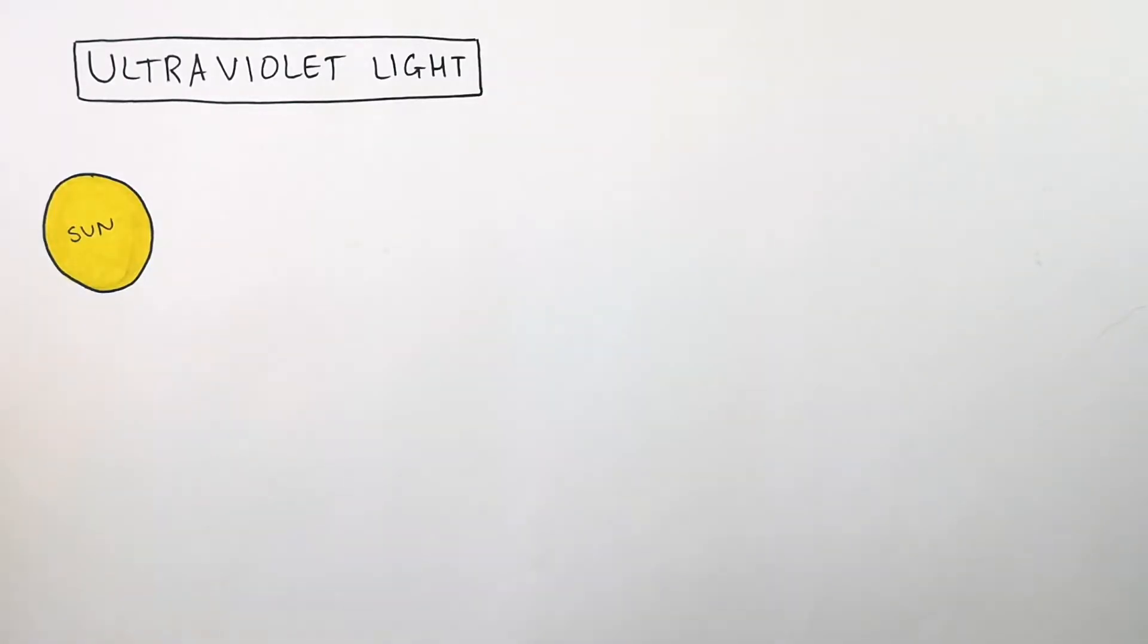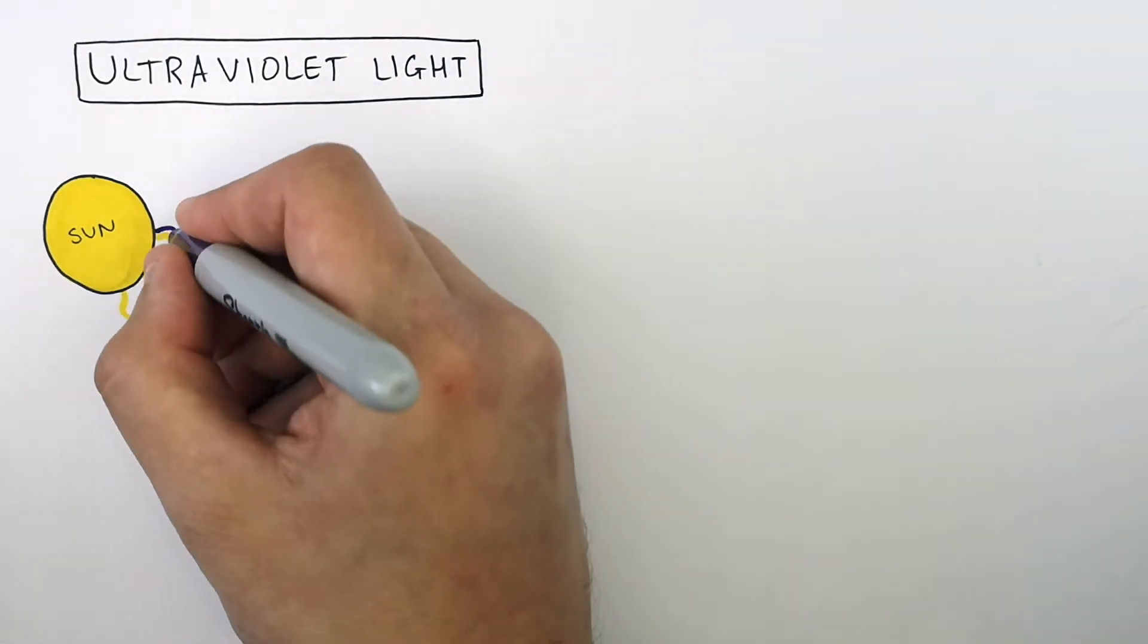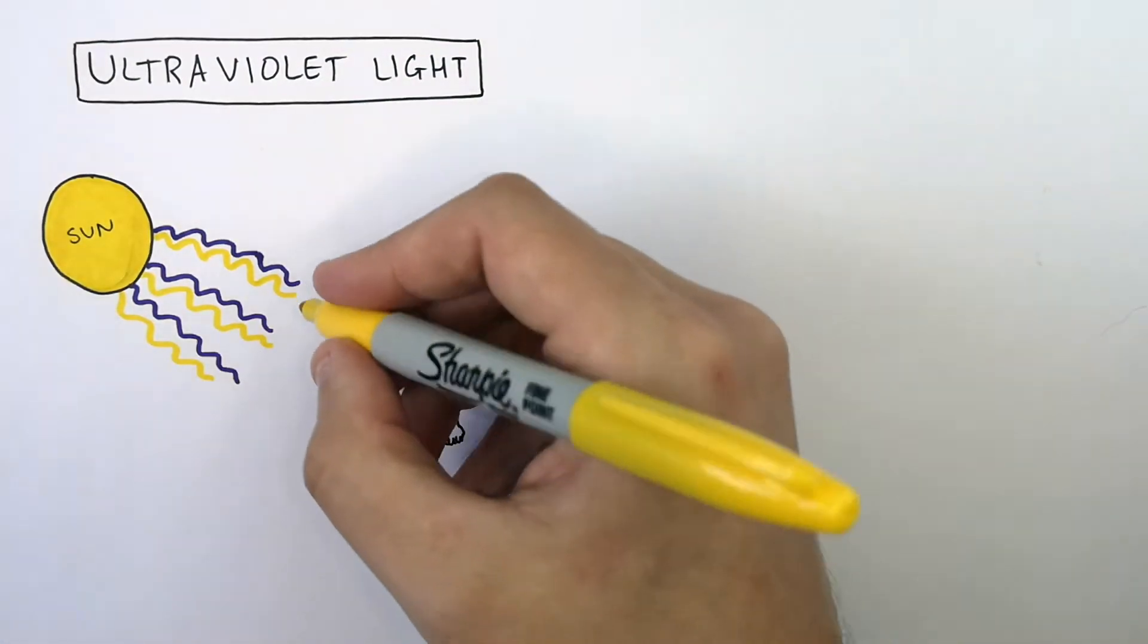So dangers of ultraviolet light are as follows. The sun emits visible light as well as ultraviolet light, and it is ultraviolet light that can cause sunburn.